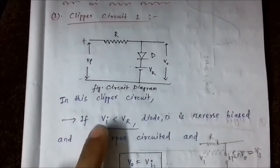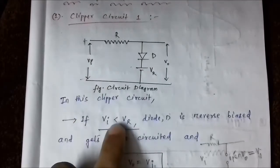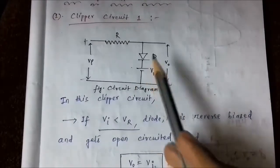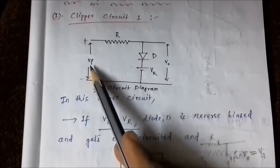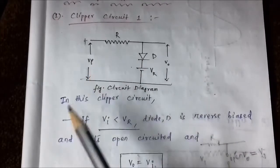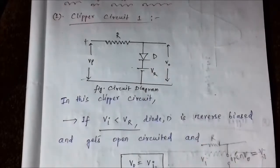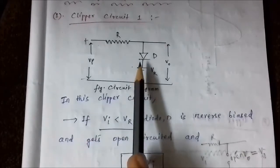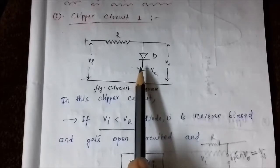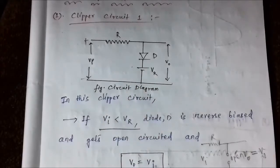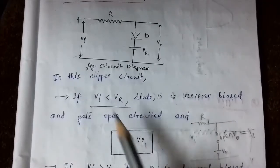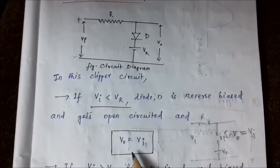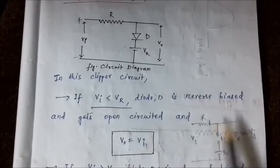When the input voltage is lesser than the reference voltage, the P-type end is at a lower potential while the N-type end is connected to a higher voltage. This means that the diode D is reverse biased and is off, opening the circuit. As a result, the entire input voltage appears across the output terminal, and the output is the exact replica of the input.